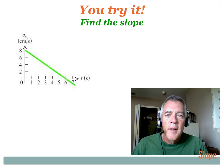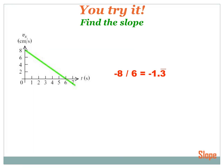Now you try this one. Hit the pause button, do the problem, and then hit the forward key to move on to the answer. Okay, hopefully you see this is pretty easy. Starting at a point, let's find the rise — it moves one, two, three, four, five, six, seven, eight down to zero, so the rise is negative eight. Now the run: one, two, three, four, five, six. Negative eight over six equals minus one point three repeating.